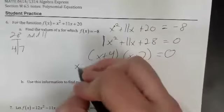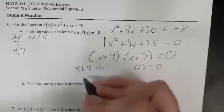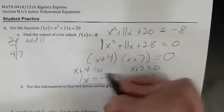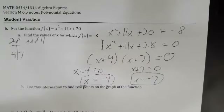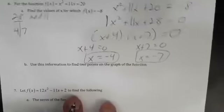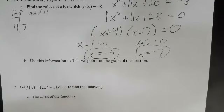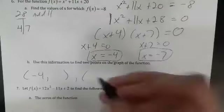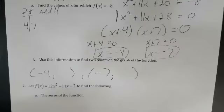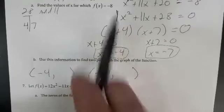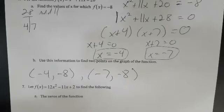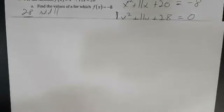Now on to step three — either this factor equals zero or the other factor equals zero. If one factor equals zero, x equals minus 4. If the other factor equals zero, x equals minus 7. Now, use this information to find two points on the graph. We want (x, y) or (x, f(x)). Our y value is the original thing they gave us: f(x) equals minus 8. So the two points are (minus 4, minus 8) and (minus 7, minus 8).